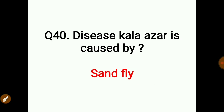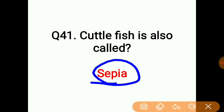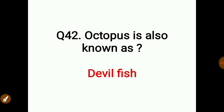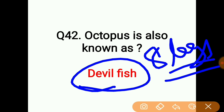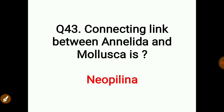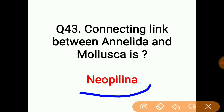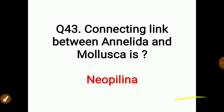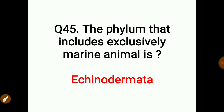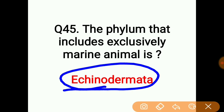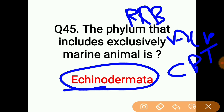Cuttlefish is also known as Sepia. Octopus is also known as devil fish and has eight legs. The connecting link between Annelida and Mollusca phyla is Neopilina. Starfish is also known as Asterias. The phylum that includes exclusively marine animals is Echinodermata, which has been asked in RRB ALP CBT1.